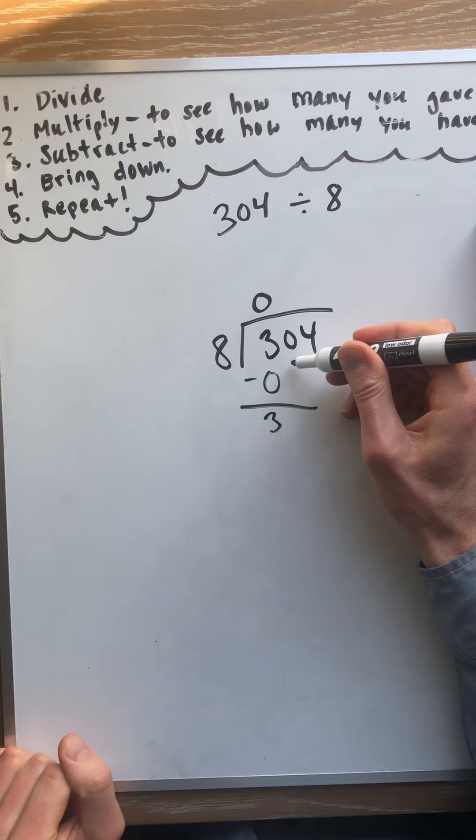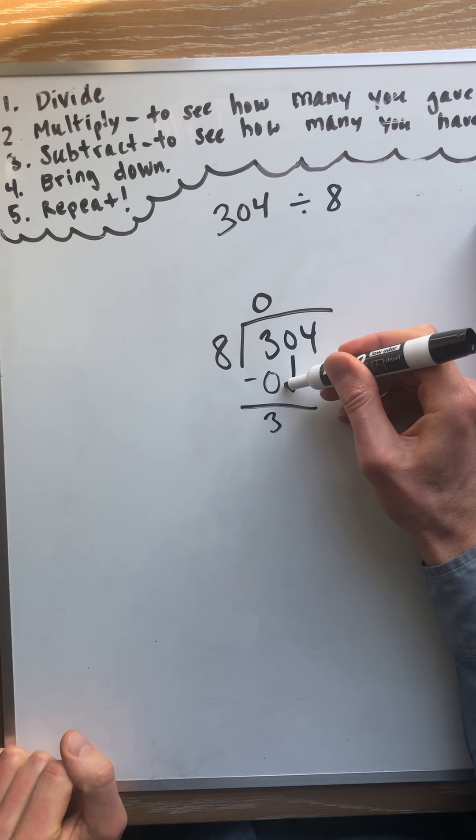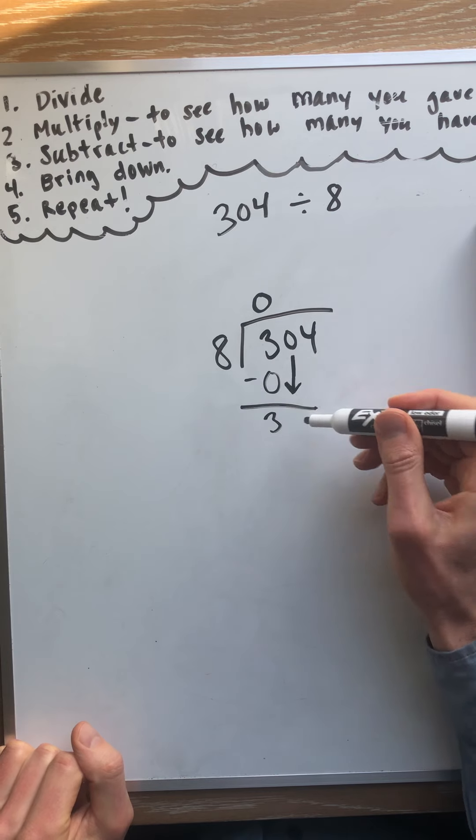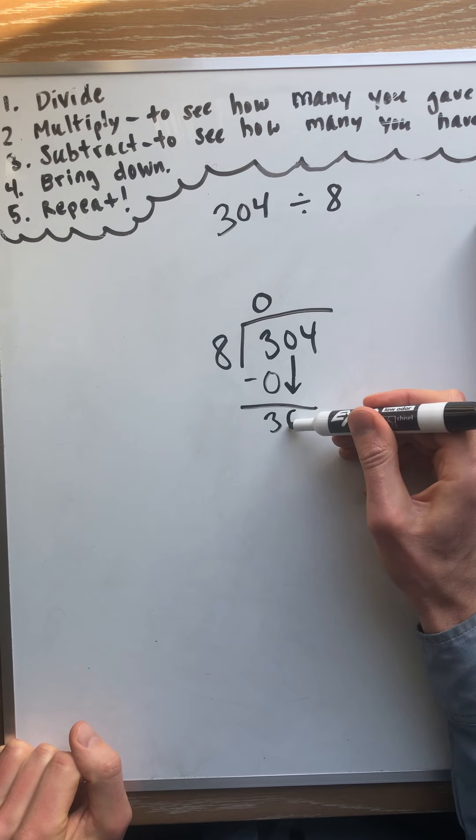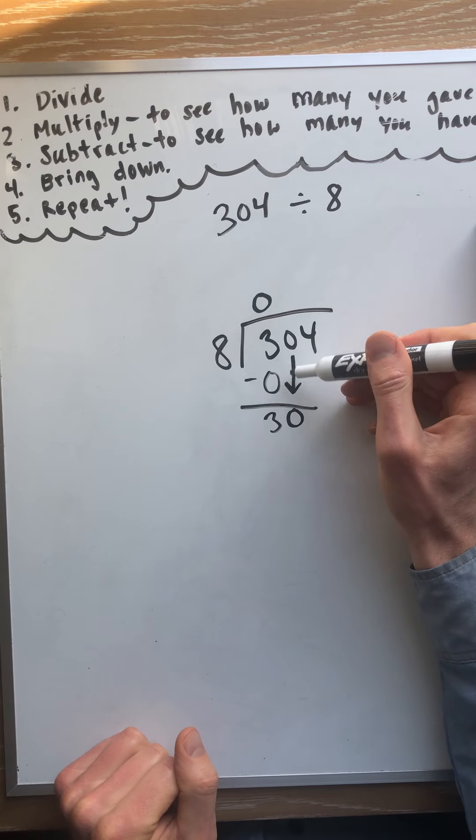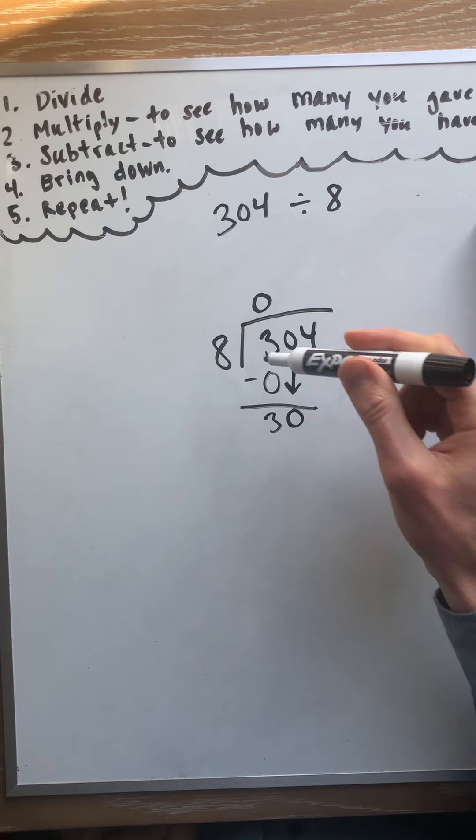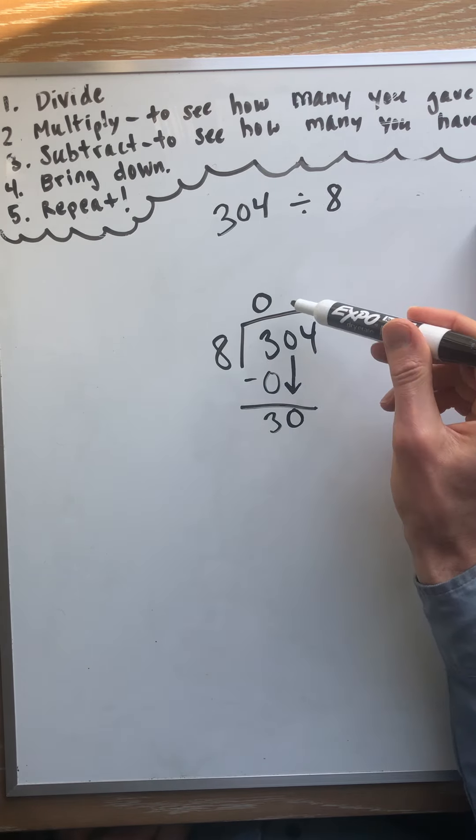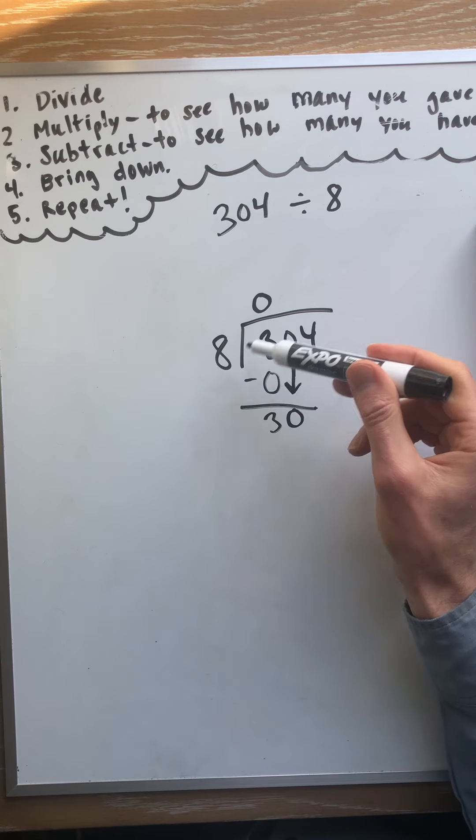Now bring down. So now we're going to bring down and we're going to think of it in terms of tens. So it's kind of like you took those three hundreds to the bank and you got 30 tens. And we already had 0, so we just have those 30. Now we can do it. 8 times what equals almost 30? Or how many groups of 8 fit into 30?